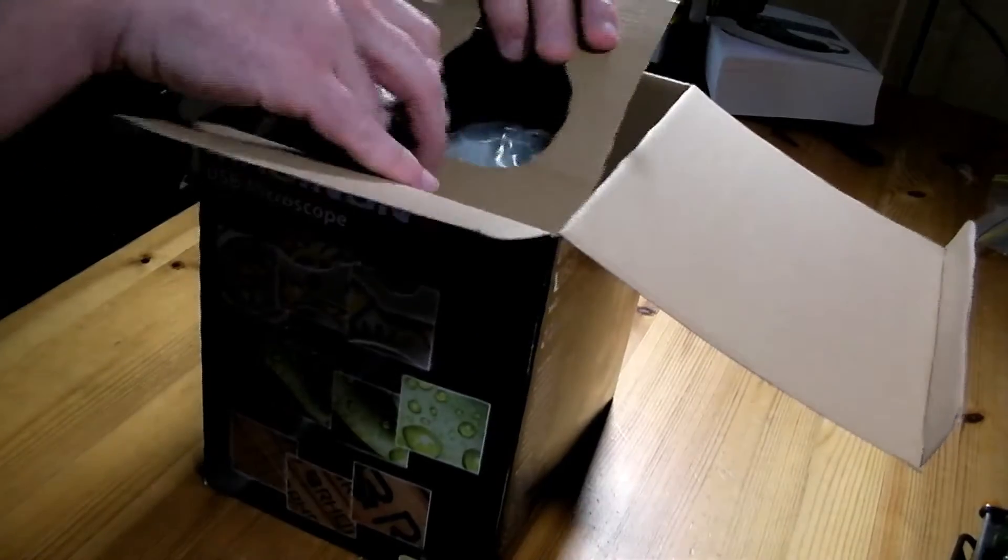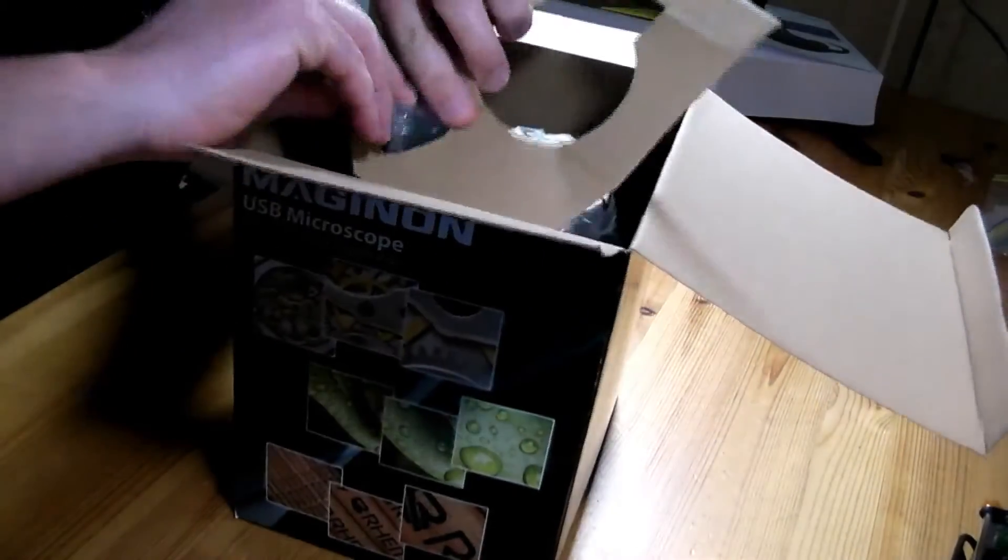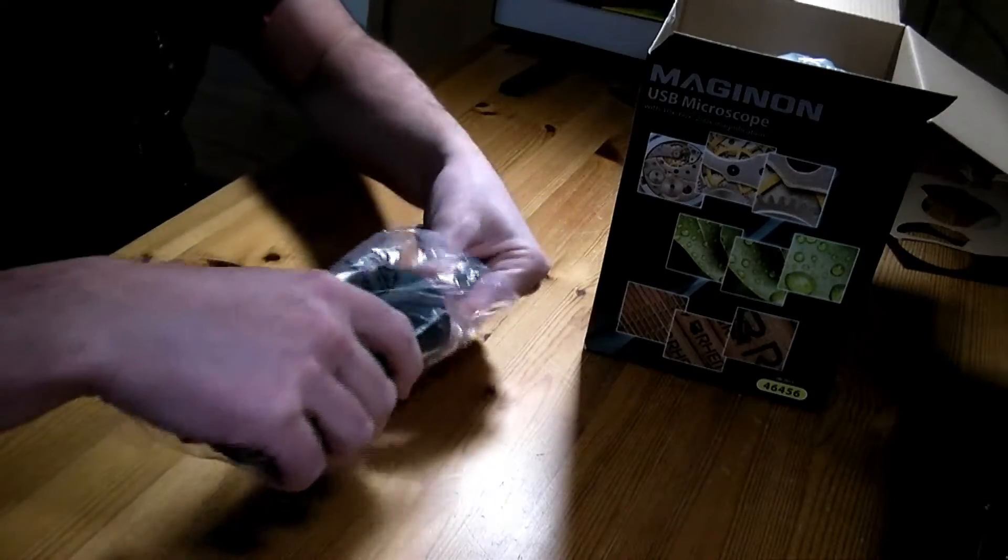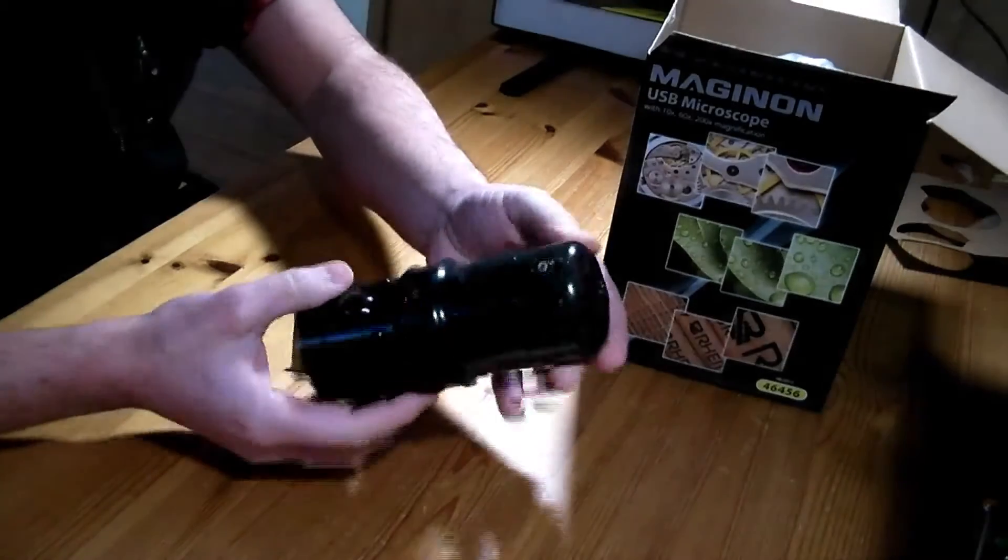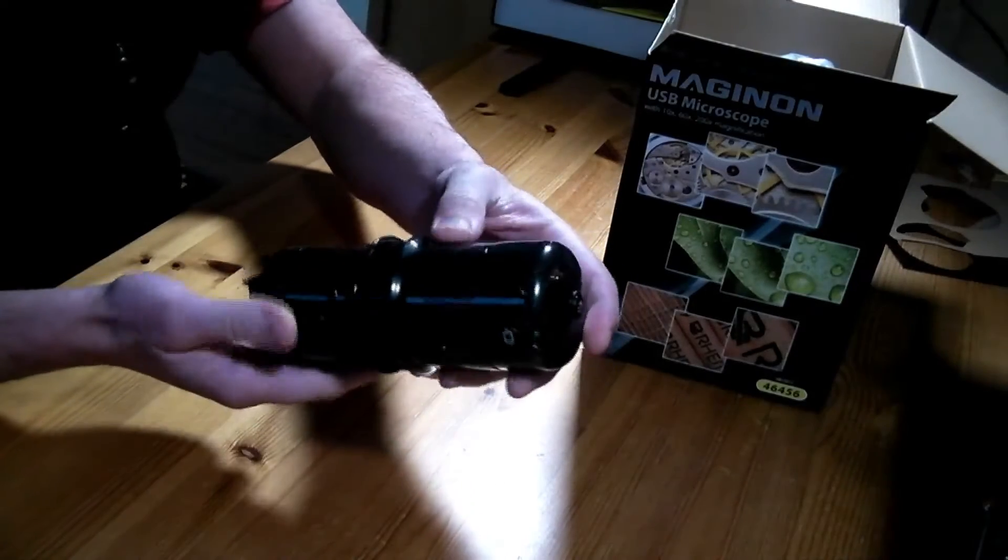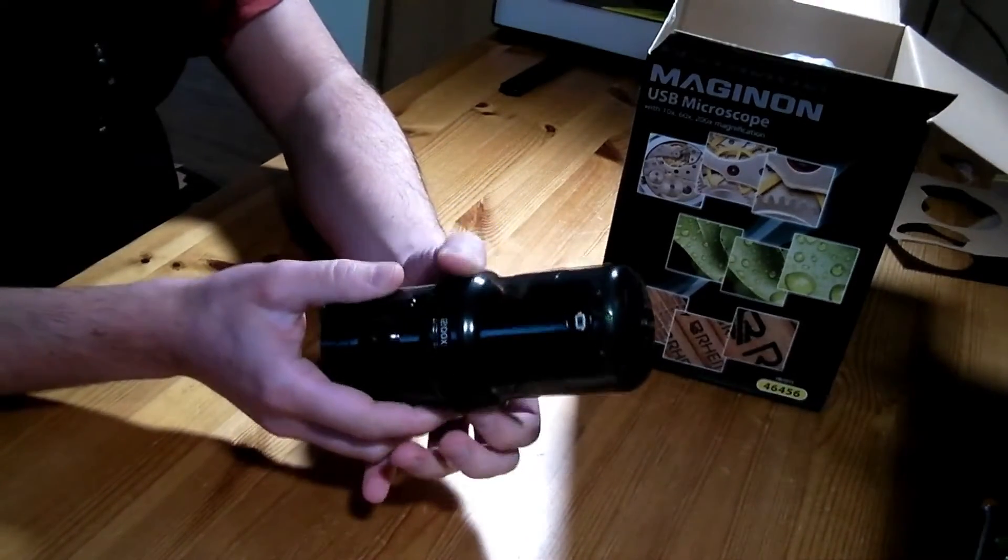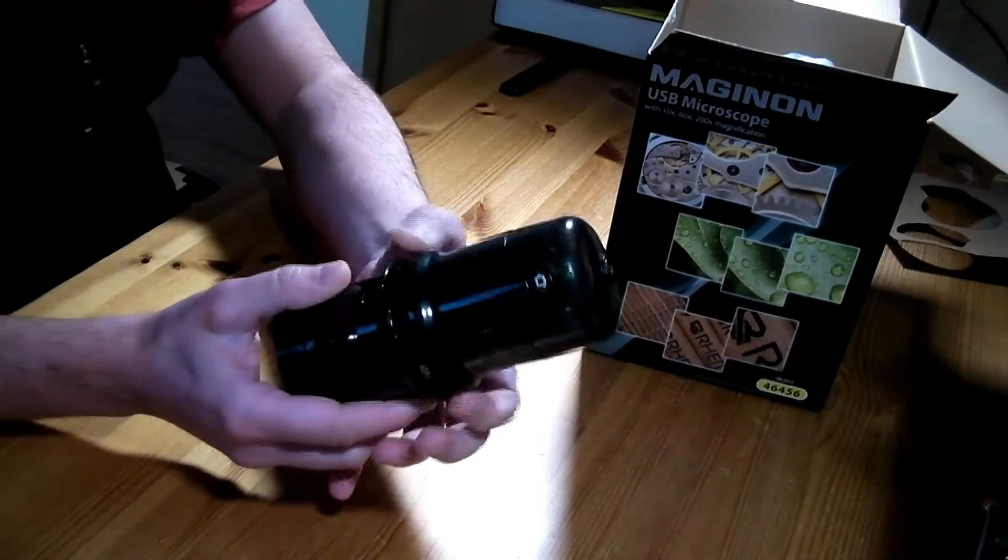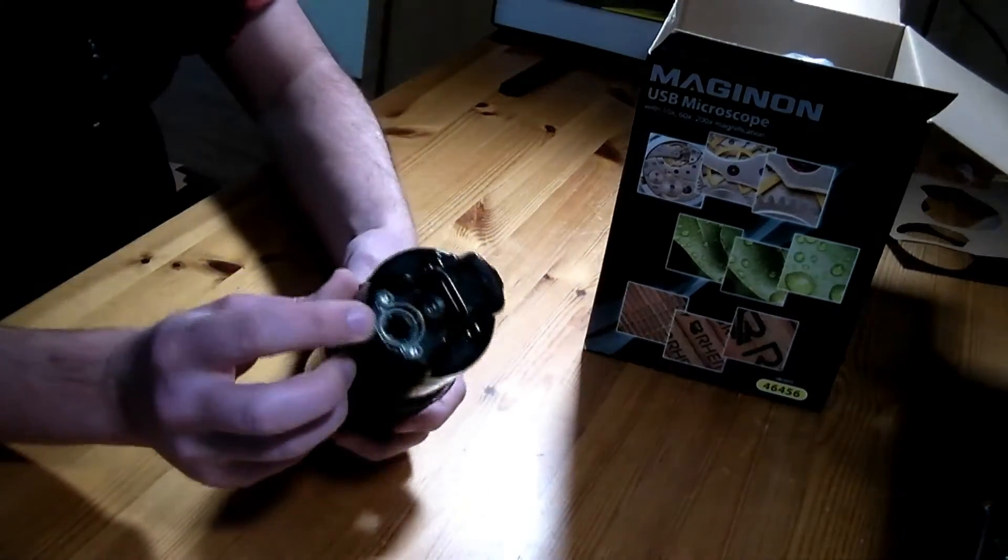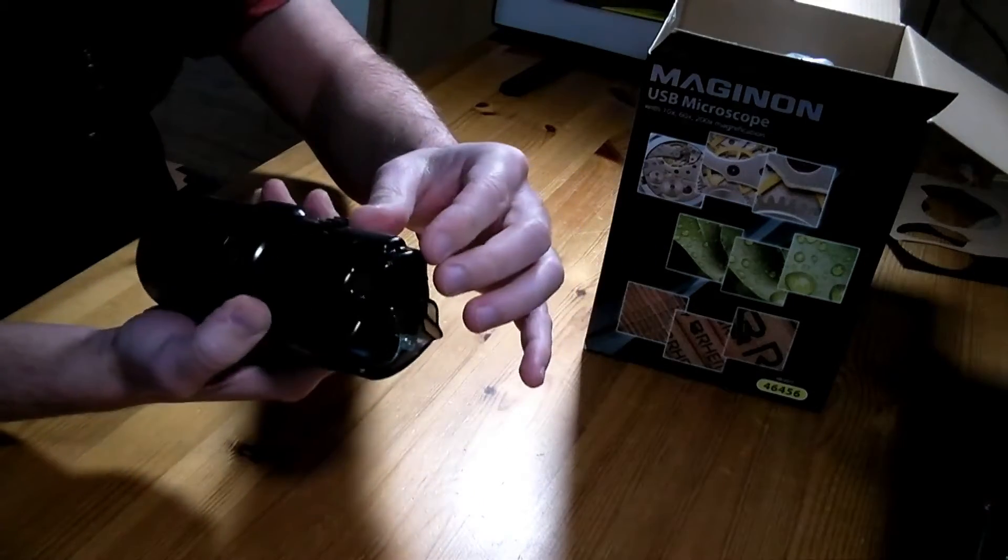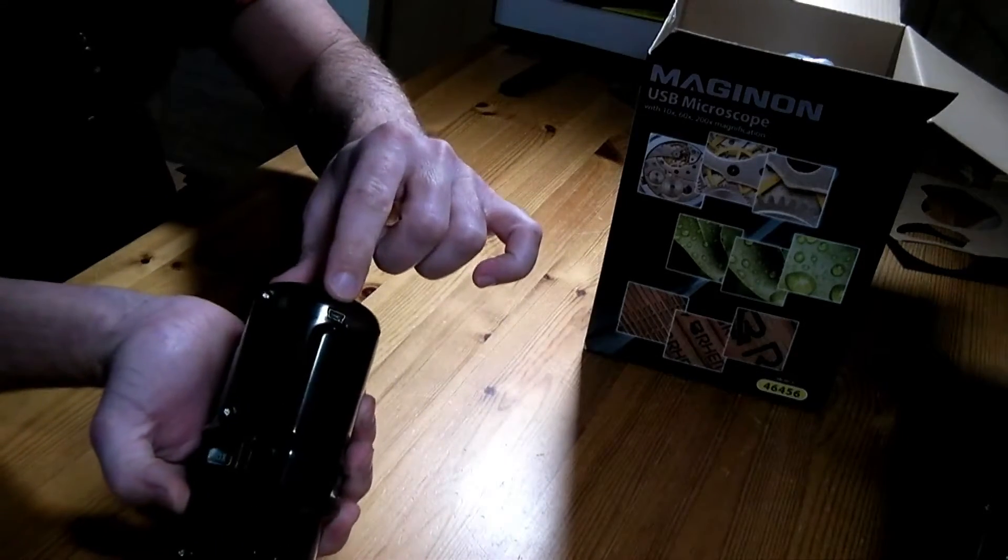Let's remove the paper. This is the optical unit. It's got LED lights embedded and switches. There's a light switch here. There is a dial that you can turn to change the magnification. 60 times, 200 times, 10 times, back to 60. There's the lens here. You can see an LED light source. There's a USB connector on the side.